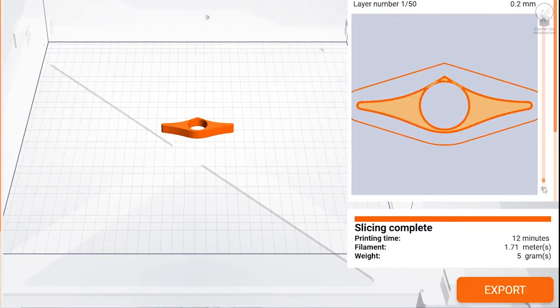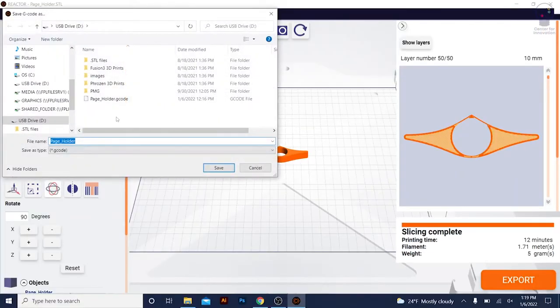Press the Export button, then make sure your file is being moved to the correct SD card and name your file. Be more creative than this person.